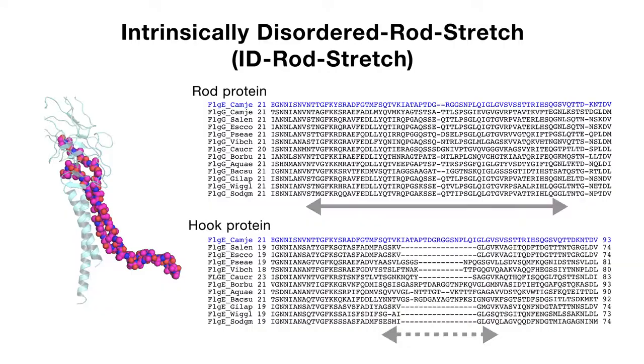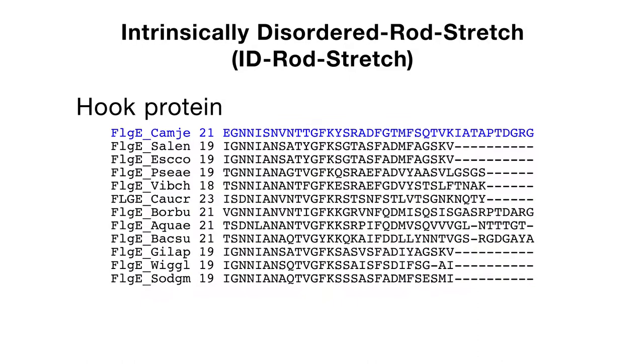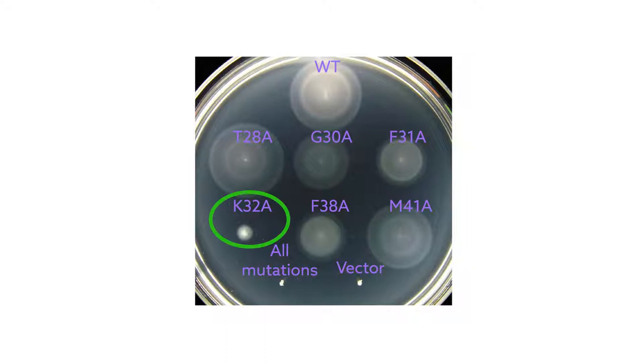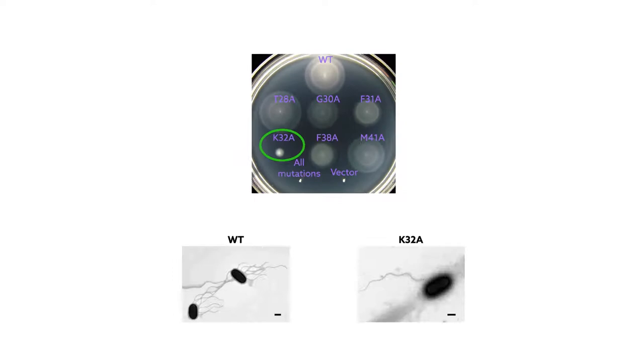To identify which parts of ID Rod Stretch are important for hook function, the researchers mutated the fully and partially conserved residues in Salmonella, both individually and as a group. When expressed in bacteria, they found that swapping out lysine-32 with an alanine left 90% of cells without any flagella, and the remaining 10% had only one or two, compared to the typical 12.